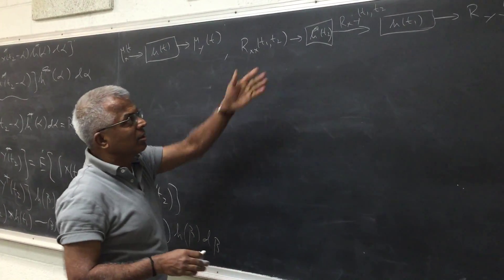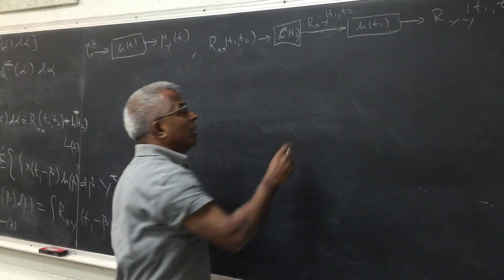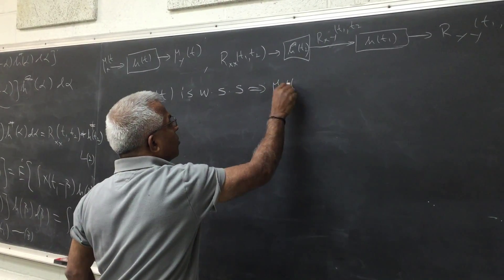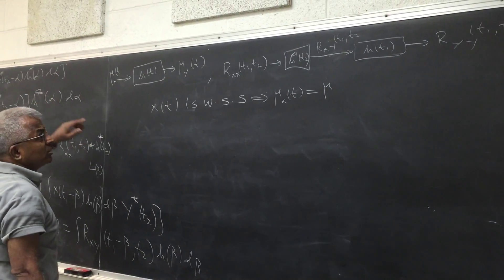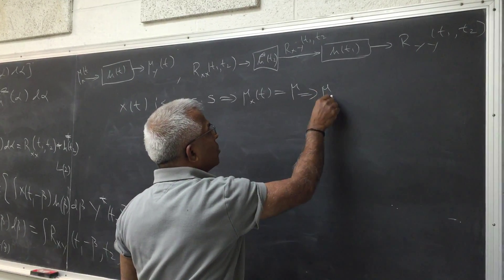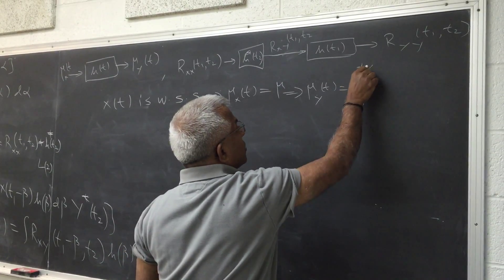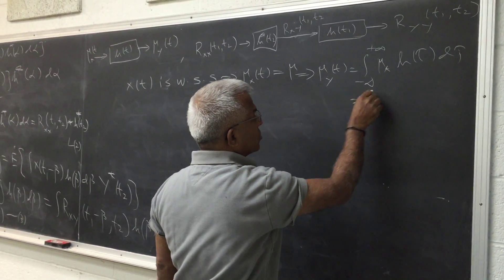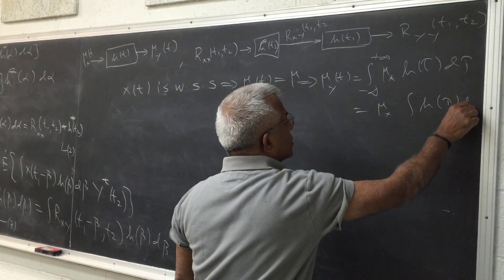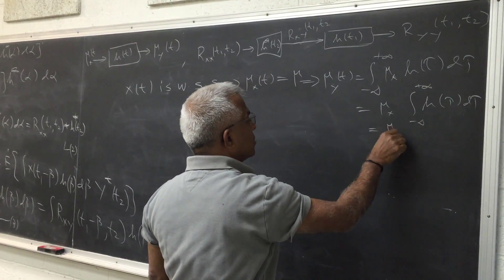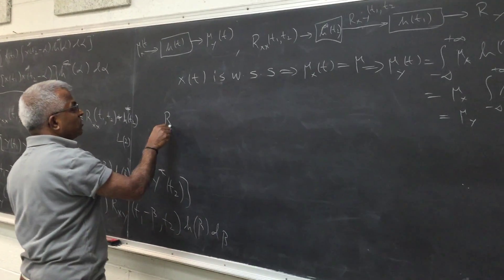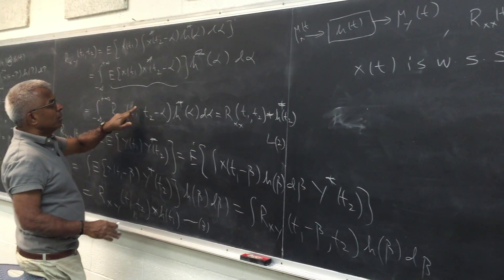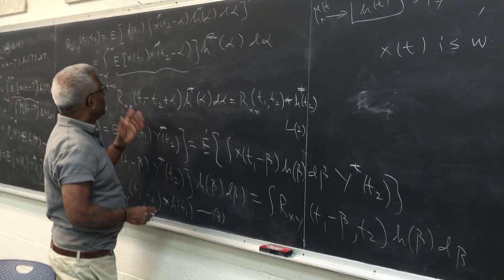Now suppose X(t) is wide-sense stationary. That means μX(t) is a constant μ. Substituting into the mean equation, the output mean becomes μX times the integral of H(τ) dτ from −∞ to +∞, which is also a constant. So the output mean is a constant.